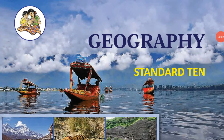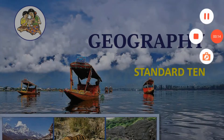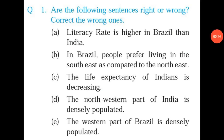Hello guys, welcome back to my channel Praveen Pithumbrae. Today I will give you the answers of Maharashtra State Board standard tenth Geography, Chapter 6: Population. This is question number one: are the following sentences right or wrong? Correct the wrong ones.